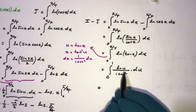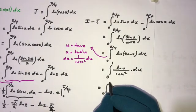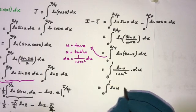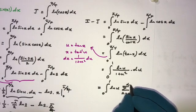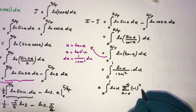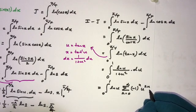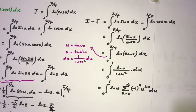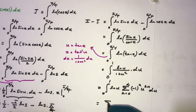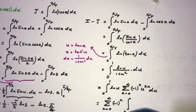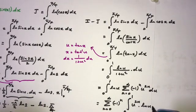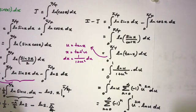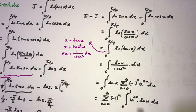We expand 1/(1 + u²) using the infinite geometric series to get the sum from n = 0 to infinity of (−1)^n · u^(2n). So I minus J equals the integral from 0 to 1 of ln(u) times the sum of (−1)^n · u^(2n) du.